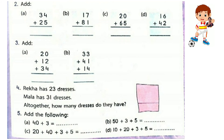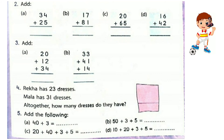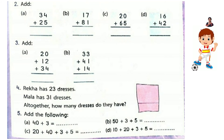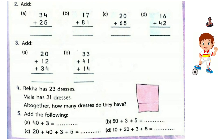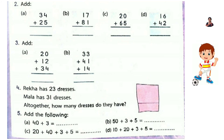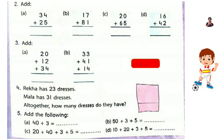Next: add. Question number 2. A: 34 plus 25. First we add the 1's place: 4 plus 5 is 9. And 3 plus 2 is 5. The answer is 59. B: 17 plus 81. In the 1's place: 7 plus 1 is 8. And in the 10's place: 1 plus 8 is 9. So the answer is 98. Do problems C and D the same way.